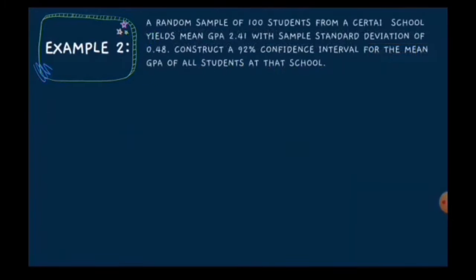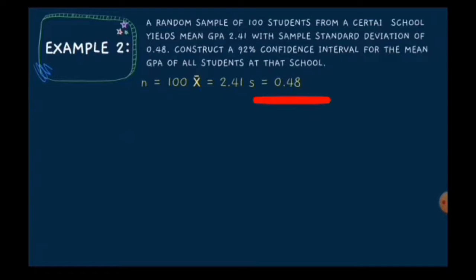For example number two: a random sample of 100 students from a certain school yields a mean GPA of 2.41 with a sample standard deviation of 0.48. Construct a 92% confidence interval for the mean GPA of all students at that school. The given values are: sample size n = 100, sample mean = 2.41, and standard deviation = 0.48.